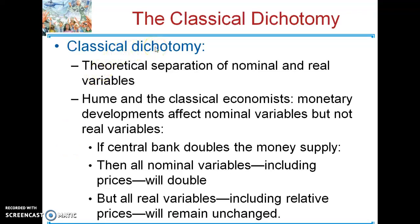The classical dichotomy is the idea that you have to separate the nominal and real variables in your economy. This was developed by David Hume, and it's one of those ideas that we still believe is true in the long term. In the short term it's a little different, but the idea is that if the central bank — or in the United States, the Federal Reserve — doubles the money supply, prices will just double.